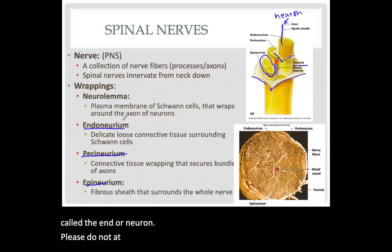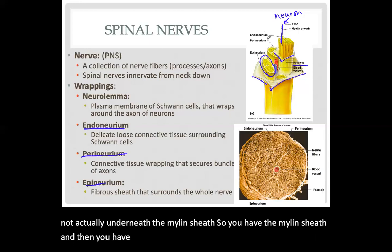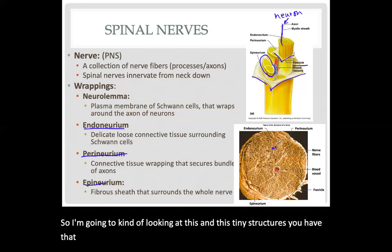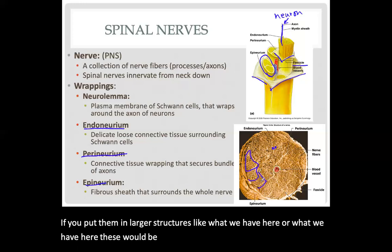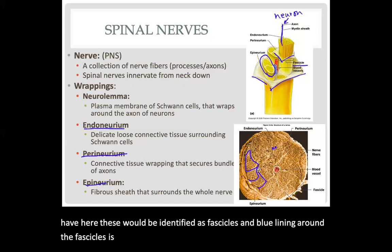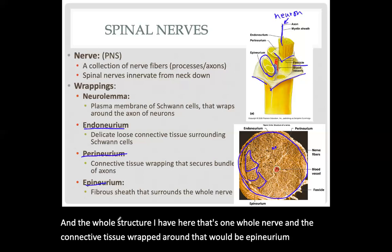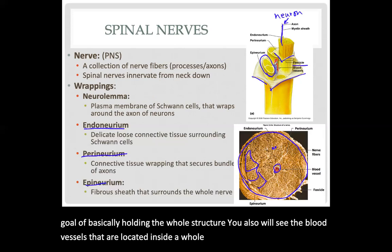These tiny structures — the tiny circles — are individual neurons wrapped with endoneurium. Grouped into larger structures, they are identified as fascicles, and the blue lining around the fascicles is called perineurium. The whole structure is one whole nerve, and the connective tissue wrapped around that is the epineurium, holding the whole structure together. You will also see blood vessels located inside the whole nerve, supplying all of the nerve cells within that structure.